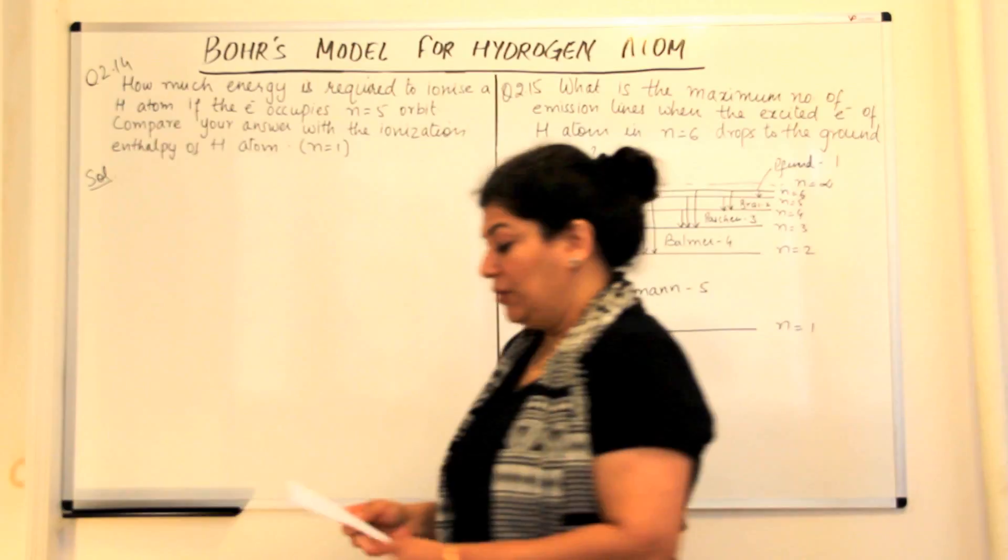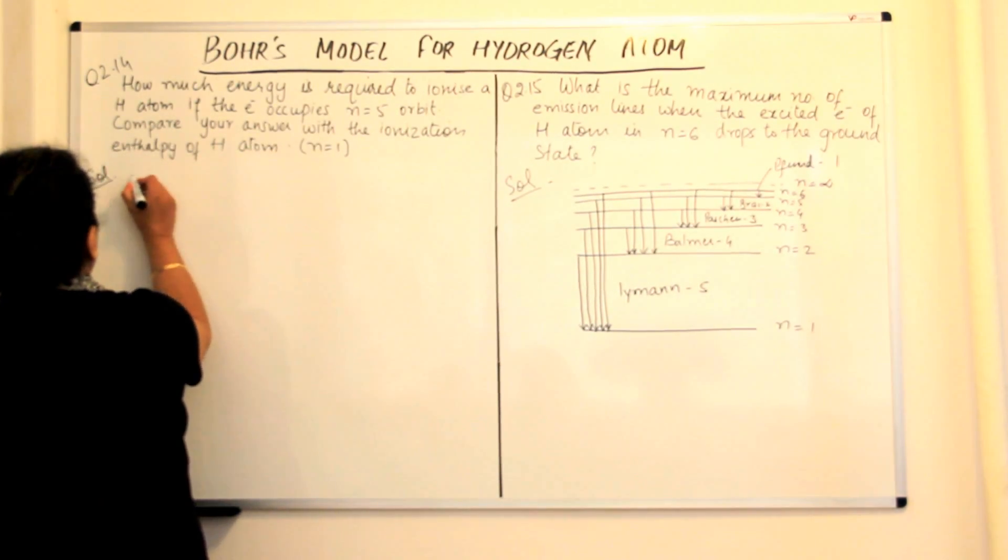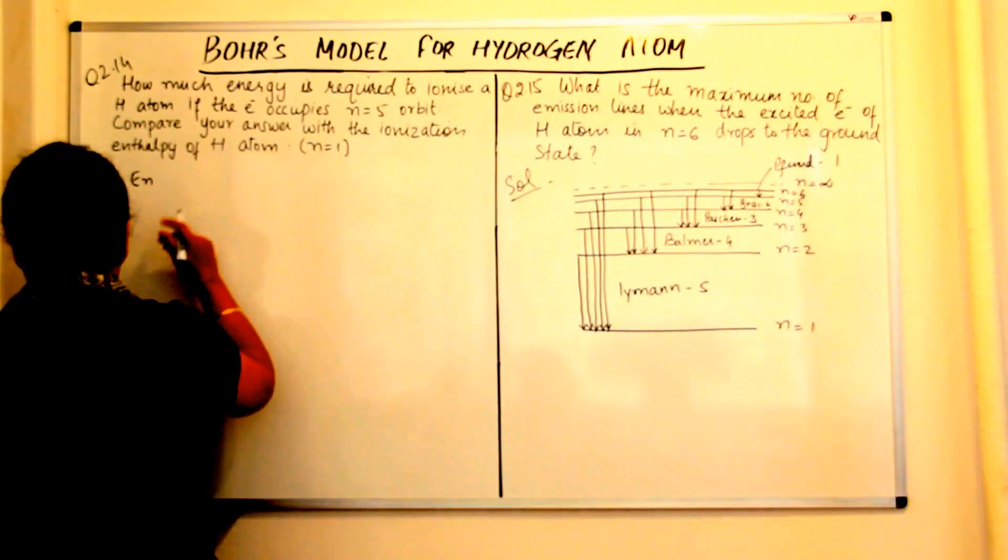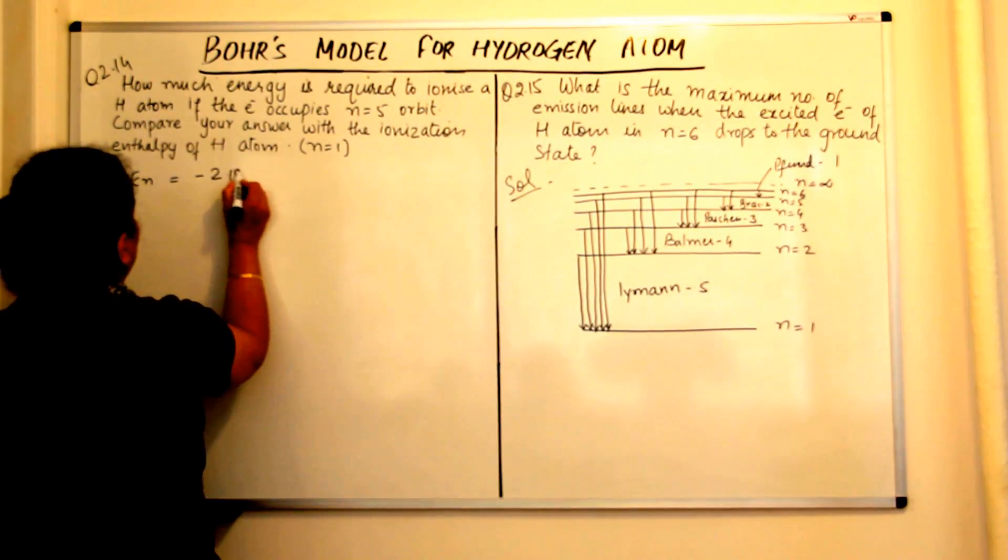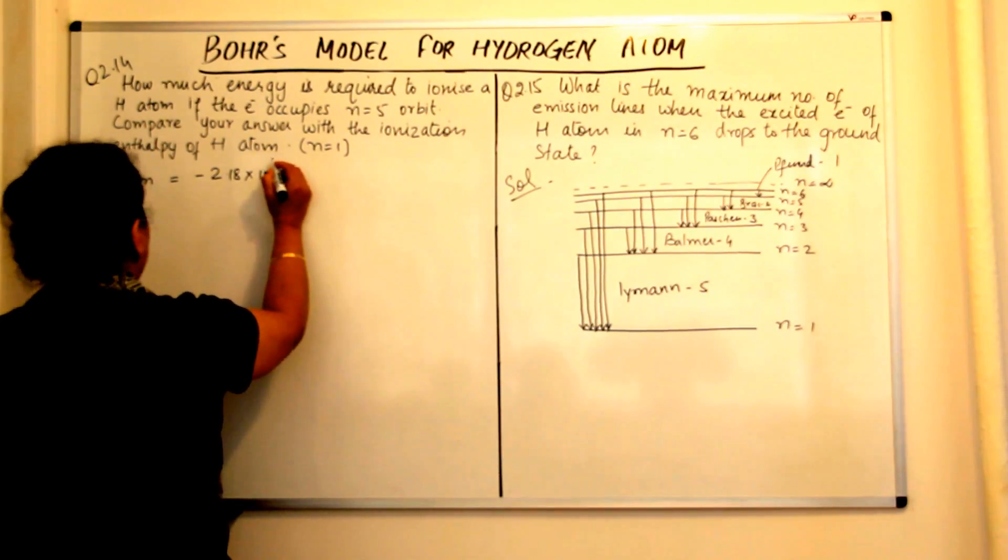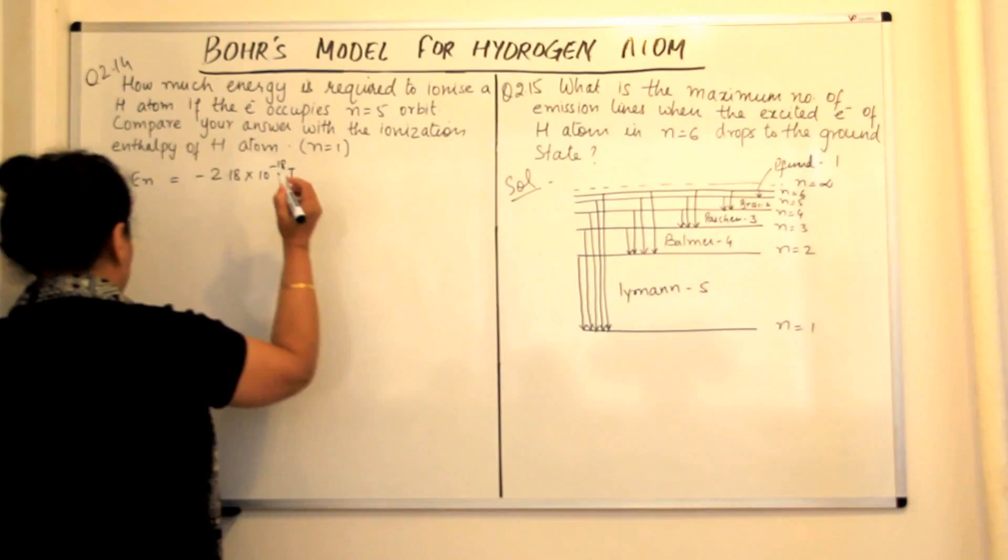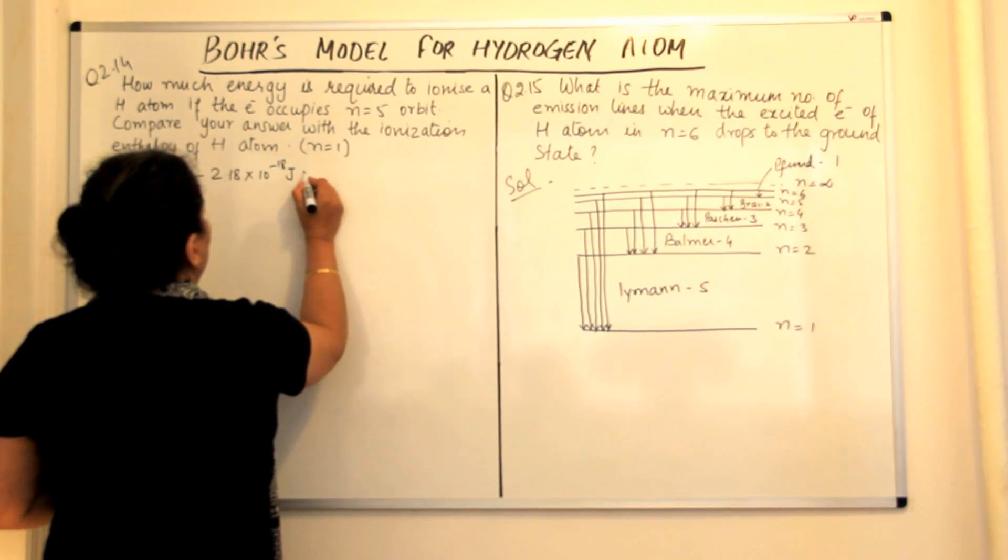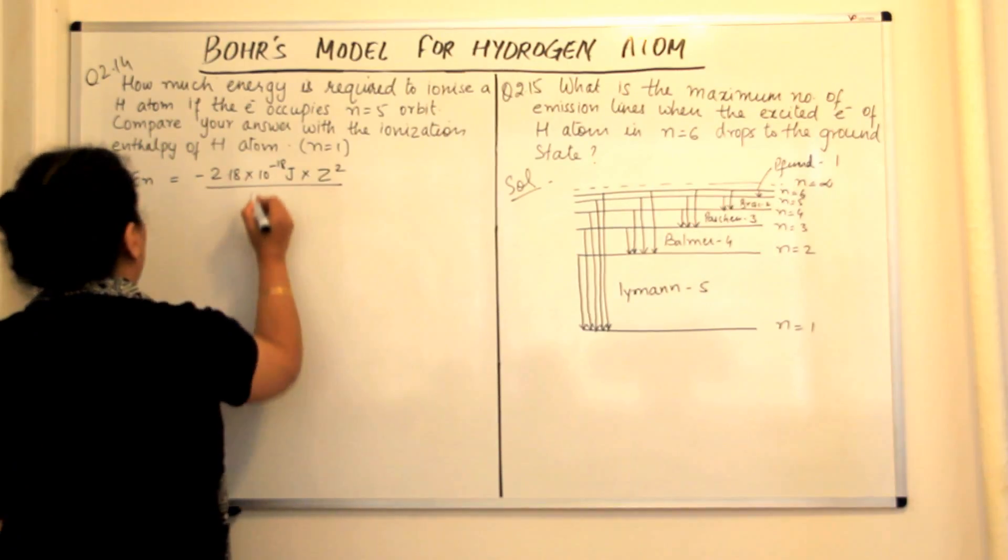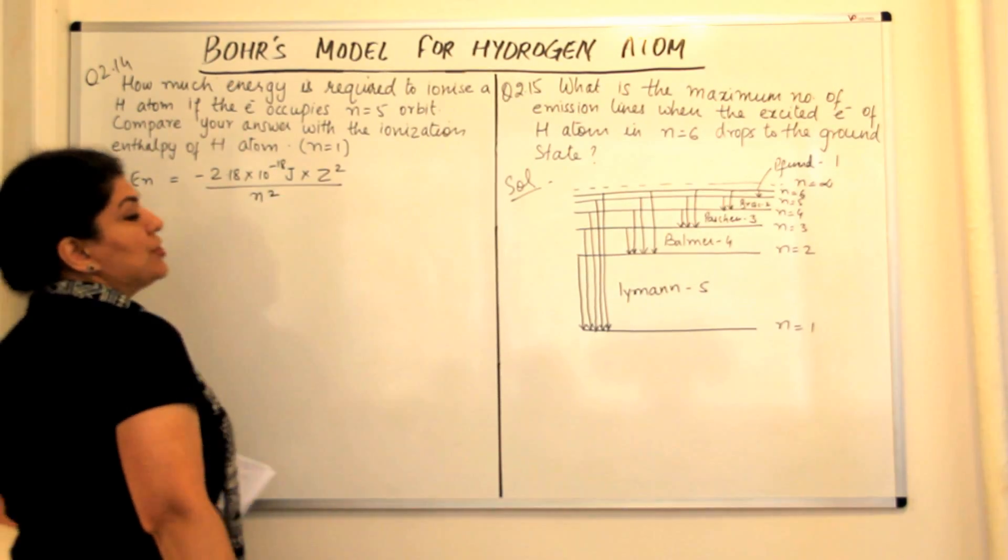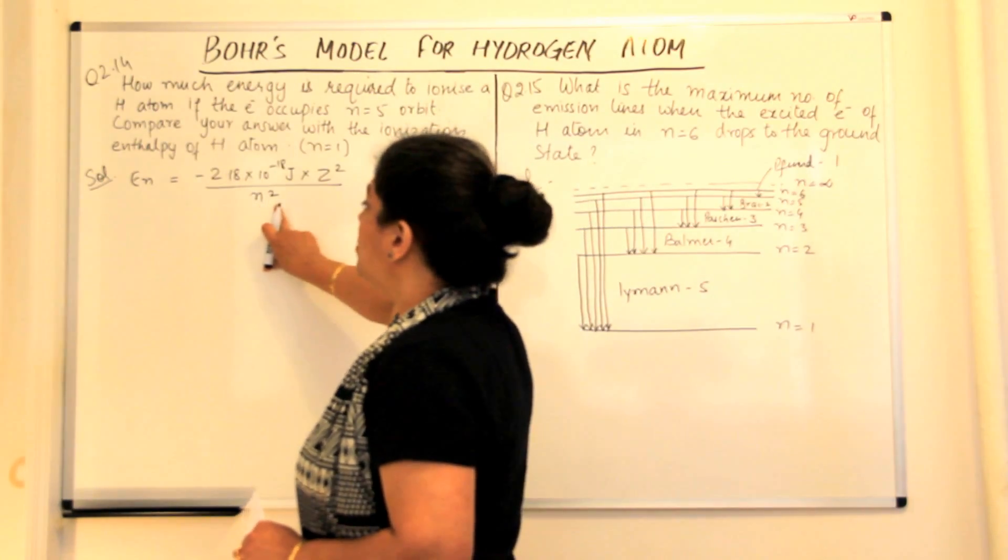What's the formula? The formula for energy of an electron in a certain shell is: E equals minus 2.18 into 10 to the power minus 18 joules, and this is the Rydberg's constant, into z square, which is the atomic number, upon n square, which is the number of the energy level, that is the shell.